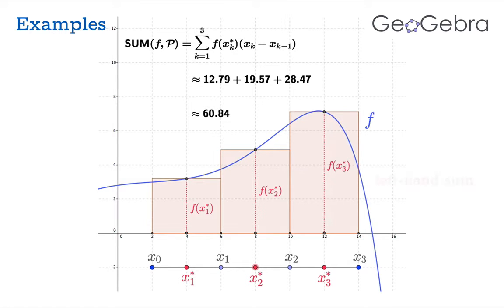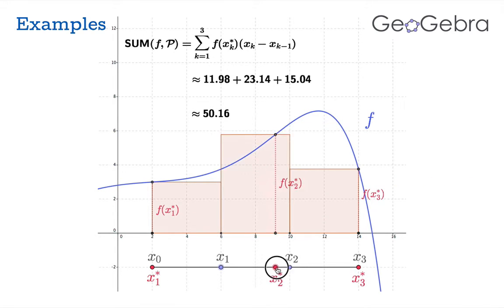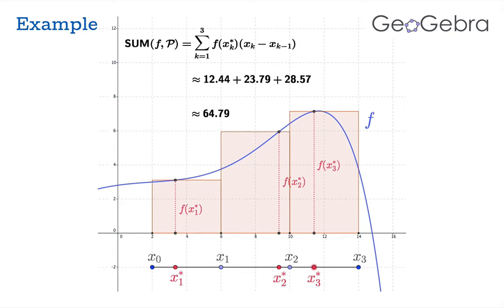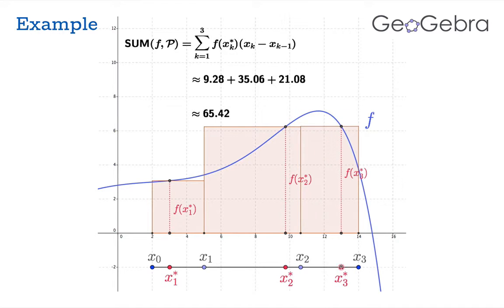Now this dynamical sheet allows us to actually drag sampling arguments around and if we drag them all to the left we get a left-hand sum. And of course we could drag them to the right as well to get a right-hand sum. And what's cool about this is we can drag things around willy-nilly to get all sorts of interesting Riemann sums. We can even drag the endpoints around to get irregular partitions so now the partition widths aren't even uniform.